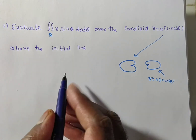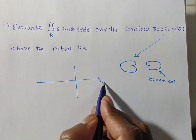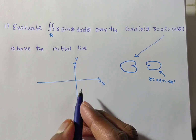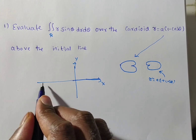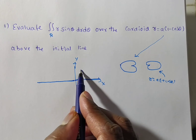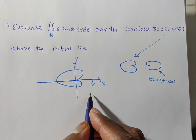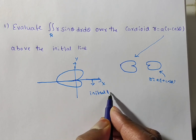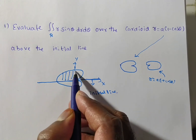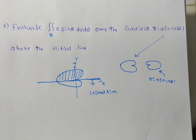We draw an x-y plane. The x-axis is the initial line. We have to evaluate the region above the initial line — that is, only in the upper half region. We need to evaluate the integrand in this region only.